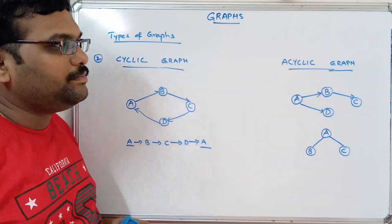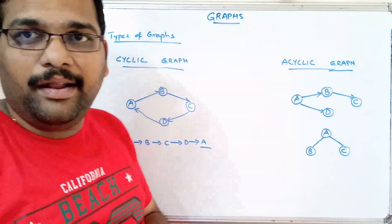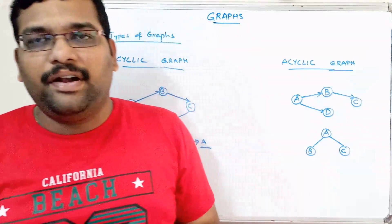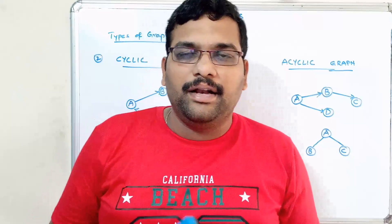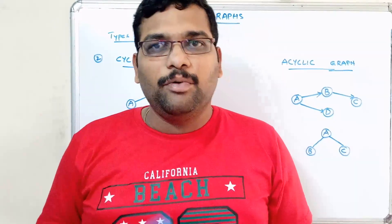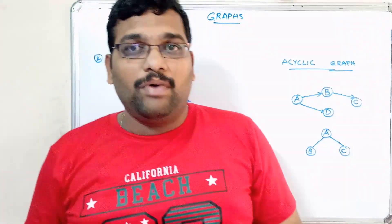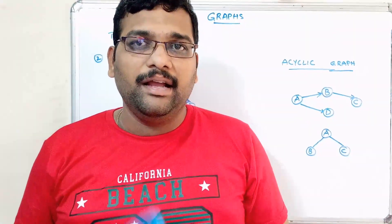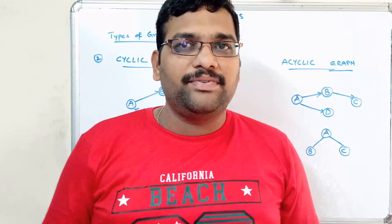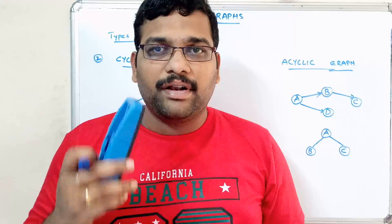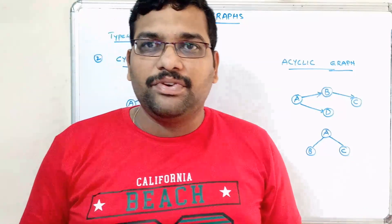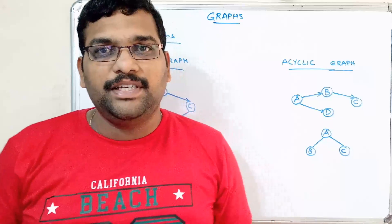So to summarize: weighted, unweighted, directed, undirected, cyclic, and acyclic are the different kinds of graphs in data structures. We also covered graph terminology — edge, graph, node, path, degree, and size. If you have any doubts about the terminology or types of graphs, feel free to post in the comment section. If you found the session helpful, like, share, and subscribe to our channel. Thanks for watching!